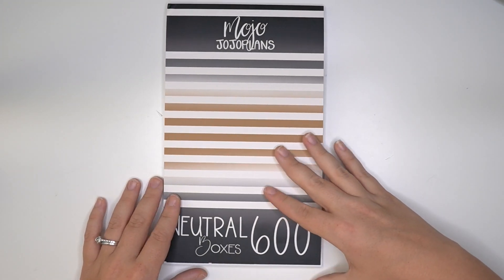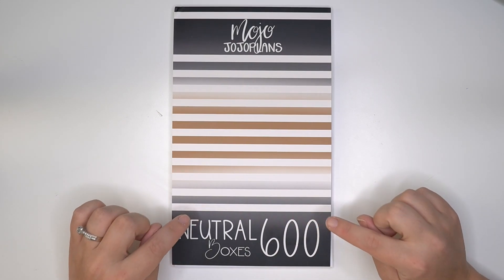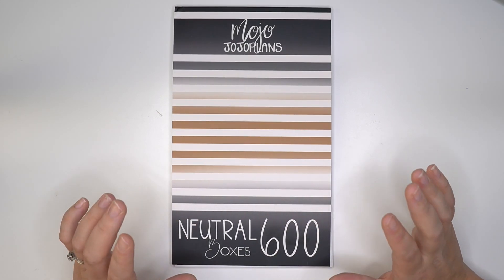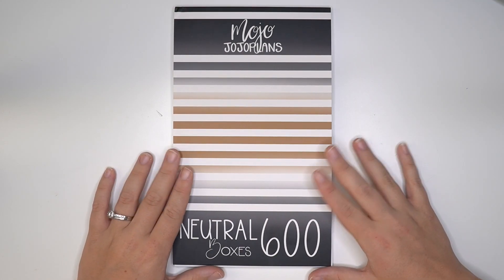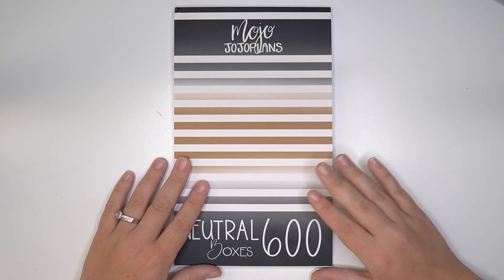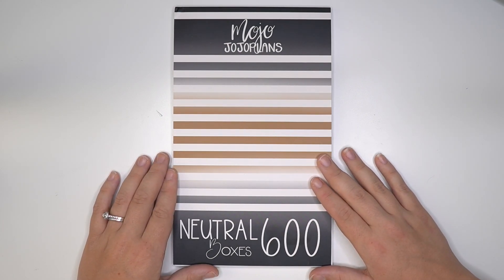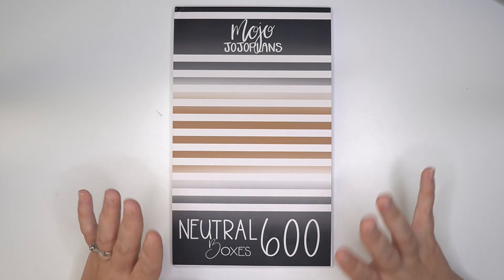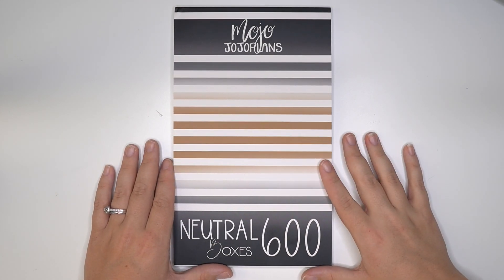And that is neutral boxes. So remember neutral boxes is being released today, July 30th at 2 PM mountain standard time. So adjust for your time zone on mojo dojo plans website, I'll have it linked down below. You guys make sure you jump on this because neutral wins. I love neutral. I cannot wait to start using this in some plan with me's and stuff like that.